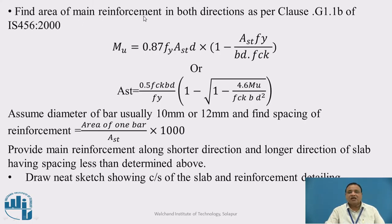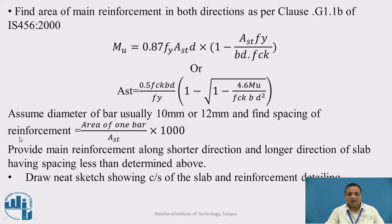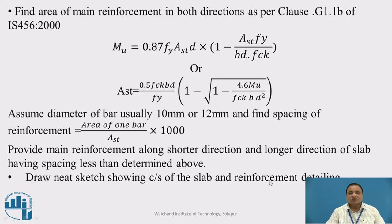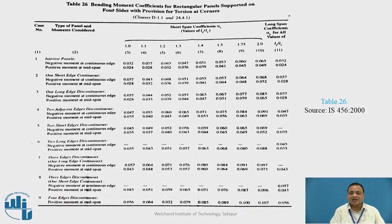Step 5: Find the area of main steel in both directions as per clause G 1.1 B of IS 456-2000. The formula is: Mu = 0.87 fy Ast d (1 − Ast fy / bd fck), or equivalently Ast = 0.5 fck bd / fy × (1 − √(1 − 4.6 Mu / fck bd²)). Assume bar diameter of 10 mm or 12 mm, then find spacing = area of one bar / Ast × 1000. Provide main reinforcement along both the short and long directions — both are main reinforcement in a two-way slab.